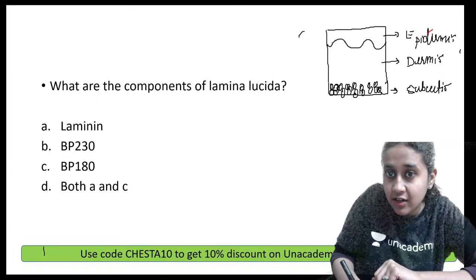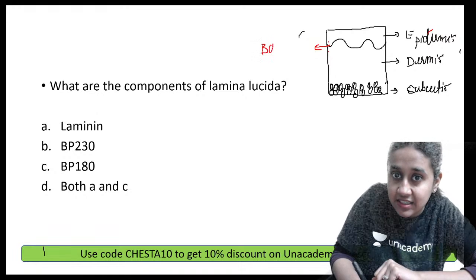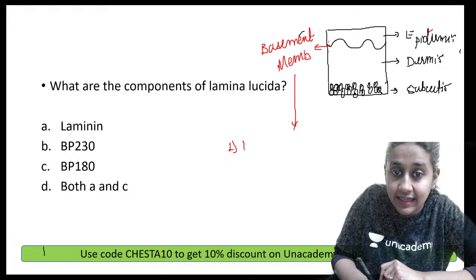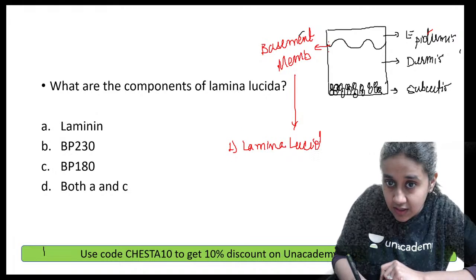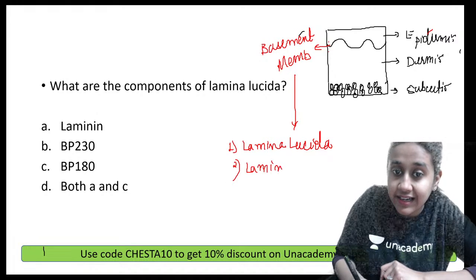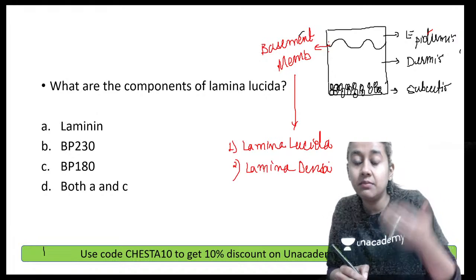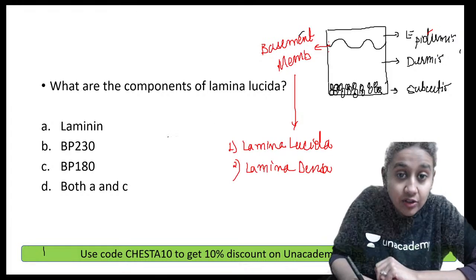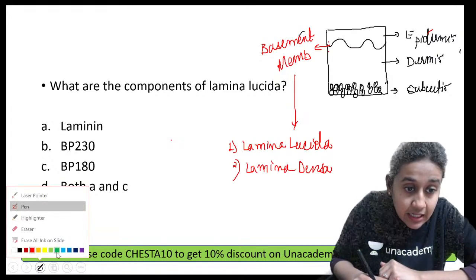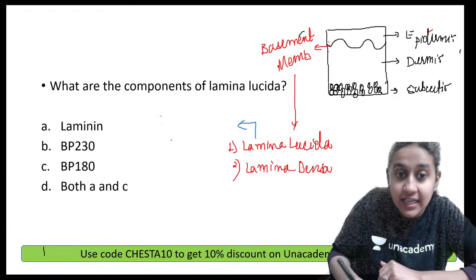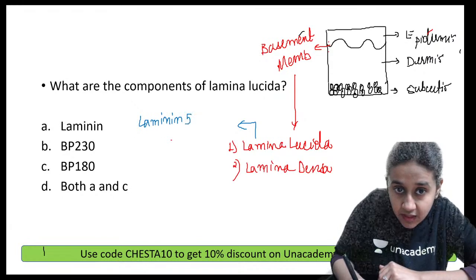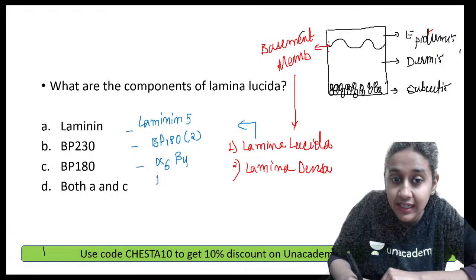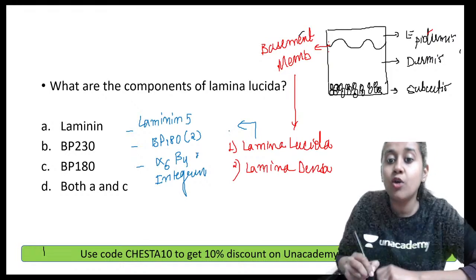At the junction of epidermis and dermis, there is a structure called the basement membrane. The basement membrane is made up of two components: Lamina Lucida and the deeper Lamina Densa. Lamina Densa is more dense under the electron microscope compared to Lamina Lucida. Lamina Lucida is made up of three components: Laminin 5, BP180 (also called BP Antigen 2), and Alpha 6 Beta 4 Integrin.